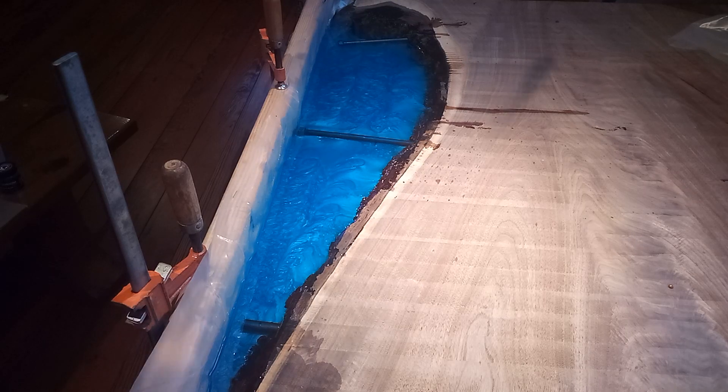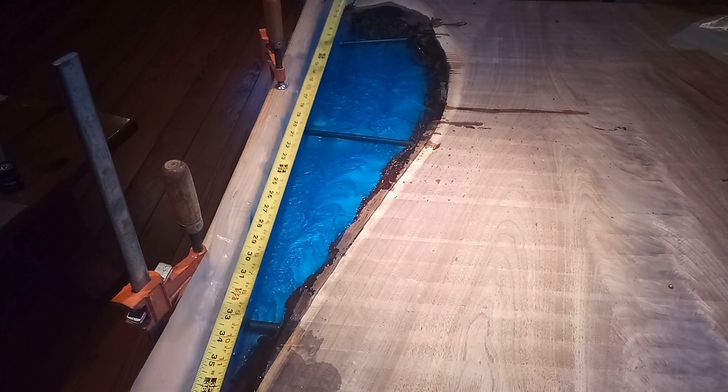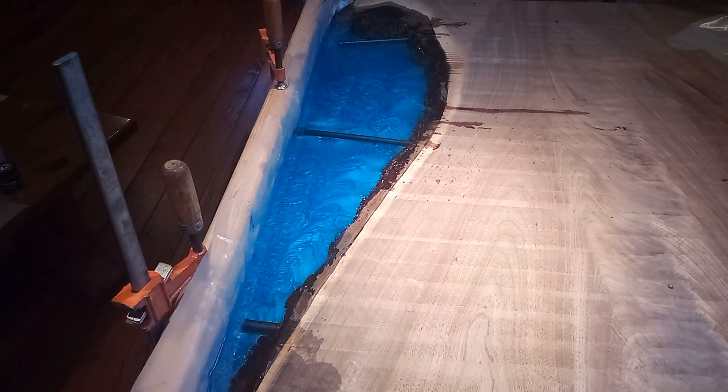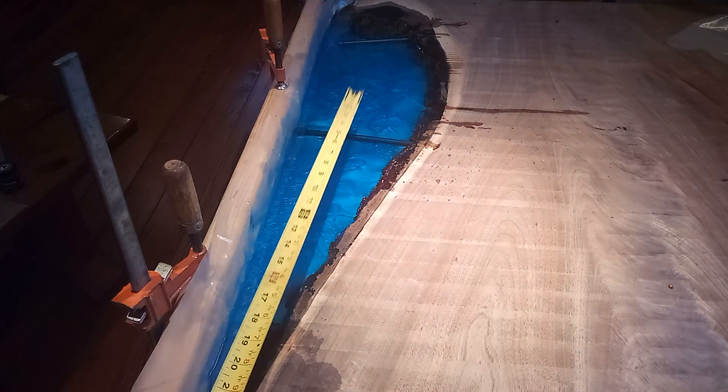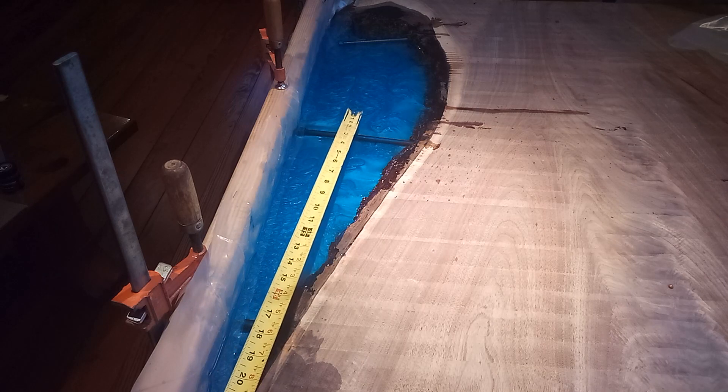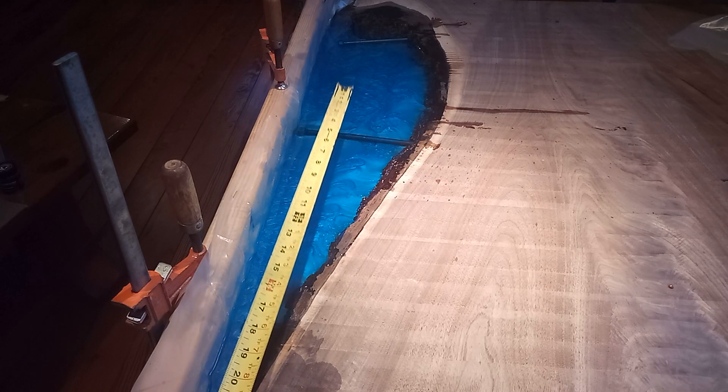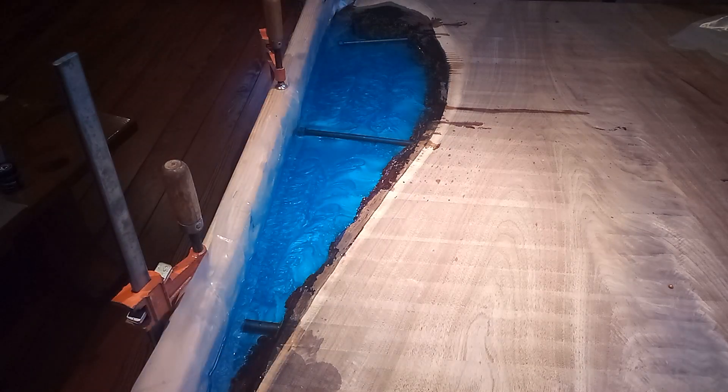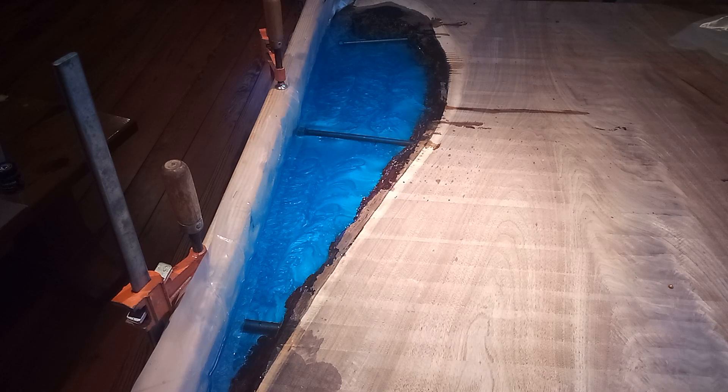This right here would be the base, and then our long leg would be this side right here. So we can use the formula for the volume of a triangular prism because, of course, this area is going to have depth to it. So it's a simple matter of just multiplying that third dimension to the area of a triangle to come up with a volume amount for the triangular prism.